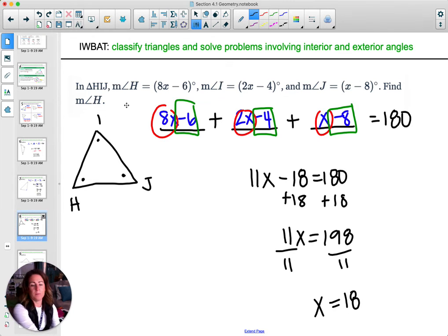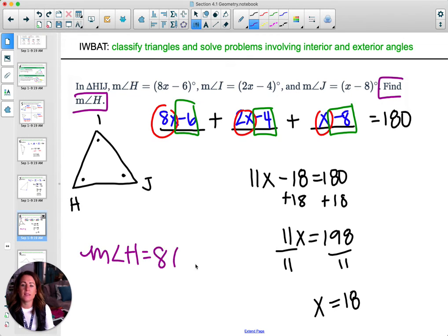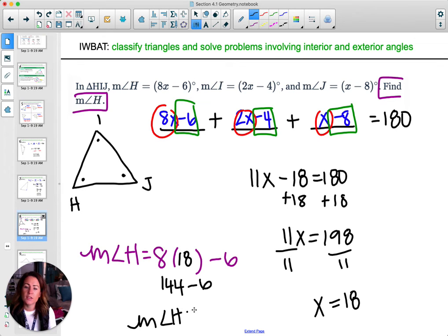And then this problem wants us to find the measure of angle H. So now we have to take this and plug it back in. So the measure of angle H is equal to 8 times x minus 6. And now we know that x is 18, so we can plug it in. So then do 8 times 18. And you get 144 minus 6. So the measure of angle H is 138. Meaning it's an obtuse triangle, so that picture isn't drawn to scale. This would be a much bigger angle here.